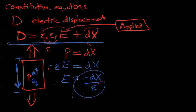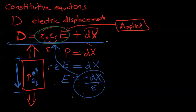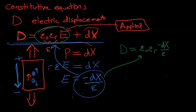So if we insert this equation into here, we can write the D again. D equals epsilon_0 epsilon_r E. But instead of writing E, we're going to insert this in there. Negative dX over epsilon. These cancel. Plus dX. D equals 0.